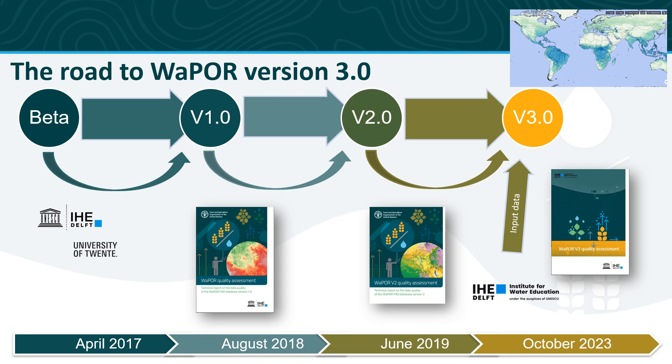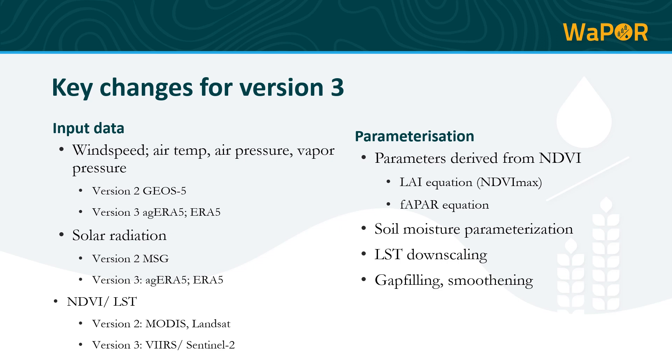Although version 3 is now globally available, the analyses are focused on Africa and the Near East with the timeframe of 2018 to 2022, as these are the spatial and temporal extents where version 2 and version 3 overlap. The quality assessment has two components: evaluating the climate input data and evaluating the WaPOR layers. In this presentation, I will focus only on the quality of the WaPOR layers. Some of the major changes from version 2 to version 3 comprise changes in the input data, both climate and land service data, further parameterization, improved data processing, gap filling and smoothening procedures. A separate quality assessment was also done on the climate input data but will not be further discussed here.